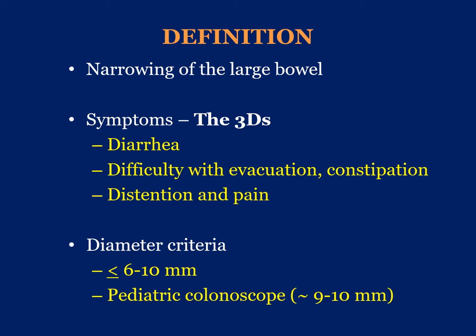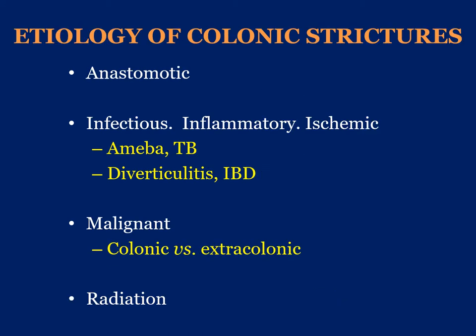In terms of what causes colonic and rectal stricture: prior surgical resection, atypical infections such as amoeba and tuberculosis, inflammatory bowel disease and diverticulitis, as well as ischemia. Malignancy — including primary adenocarcinoma of the colon or extra-colonic or extra-abdominal malignancy such as breast, esophagus, stomach, hepatobiliary, gynecologic, or urologic — can all cause carcinomatosis with extrinsic compression on the colorectum.